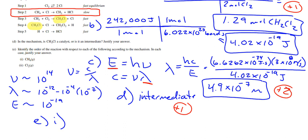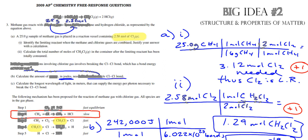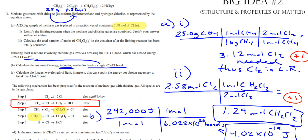Just to confirm: there's one CH4 here and still only one there - that'll really push you into saying first order. It's first order because there's only one CH4 molecule in the slowest step.